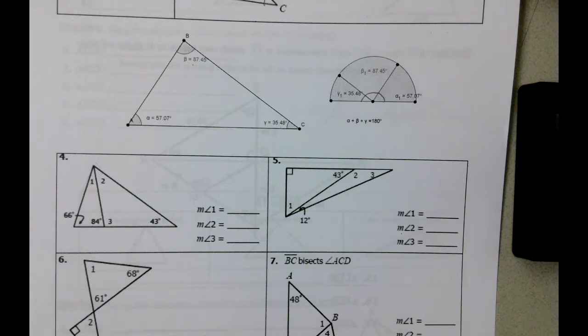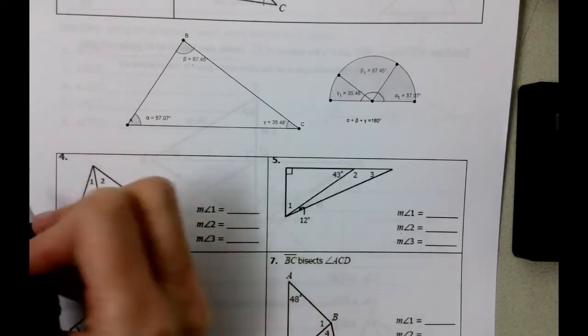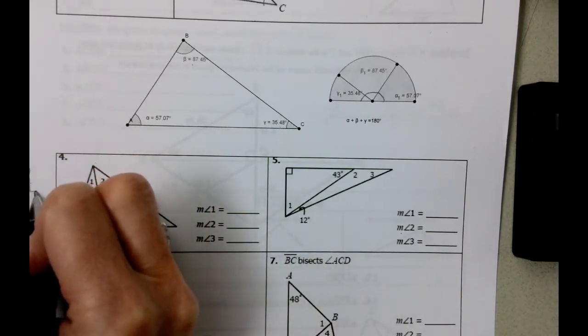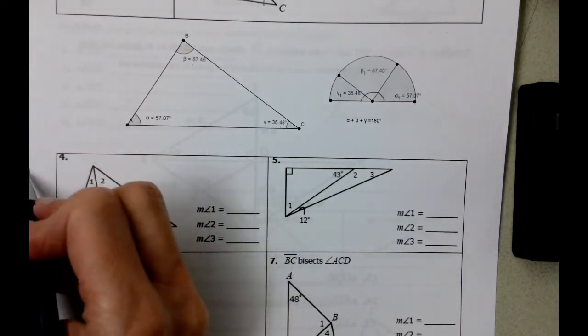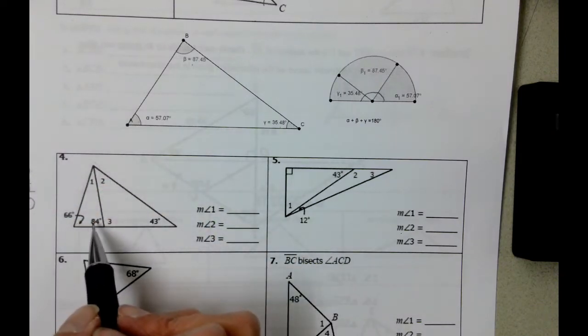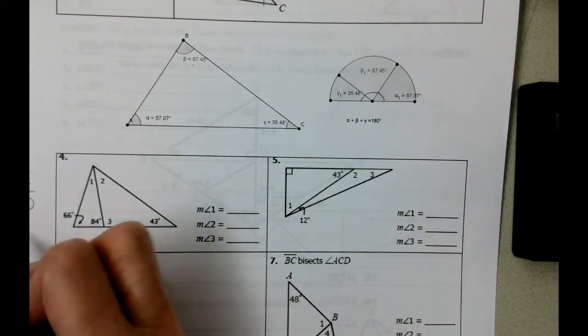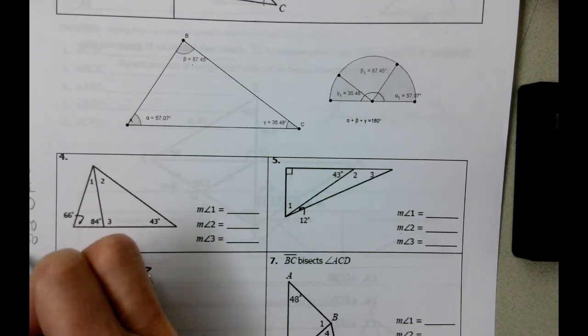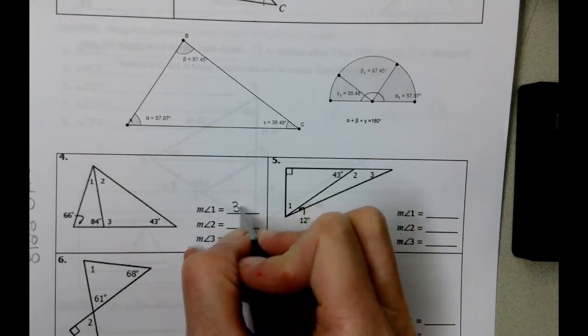What we can do is we can take 66 and add it to 84. When we add those two together, six and four is ten, carry the one, eight, six, fourteen, fifteen. That gives us 150 degrees for these first two angles right here. And then what we want to know, well, how much is angle one? If we take 180 degrees minus 150 degrees, that's going to give us 30 degrees, which is the measure of angle one.